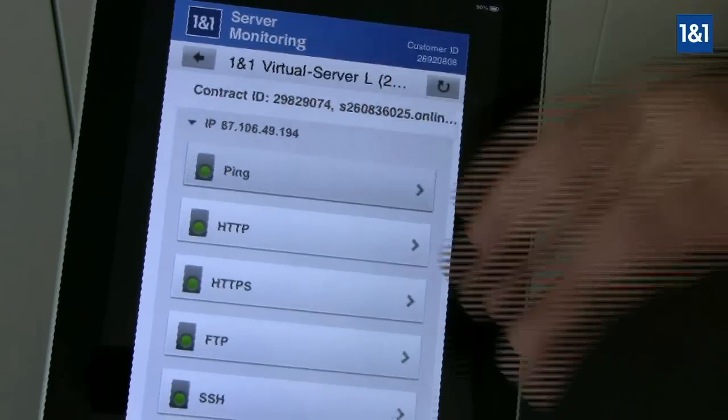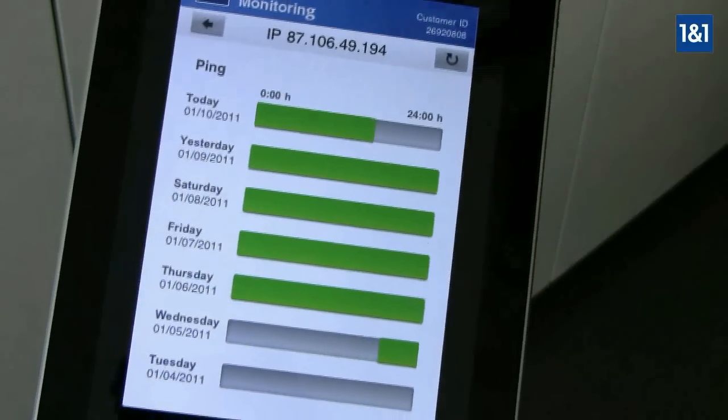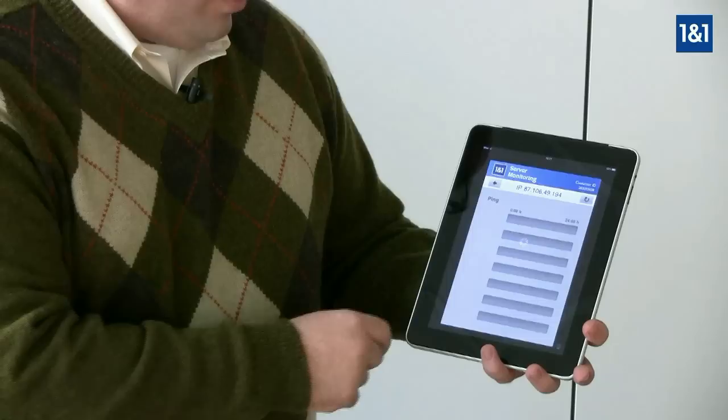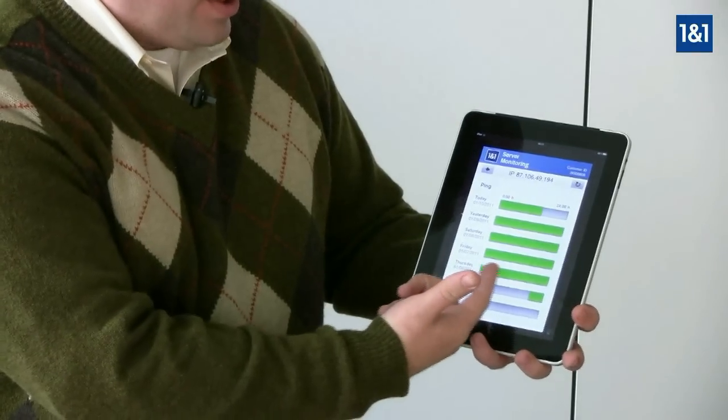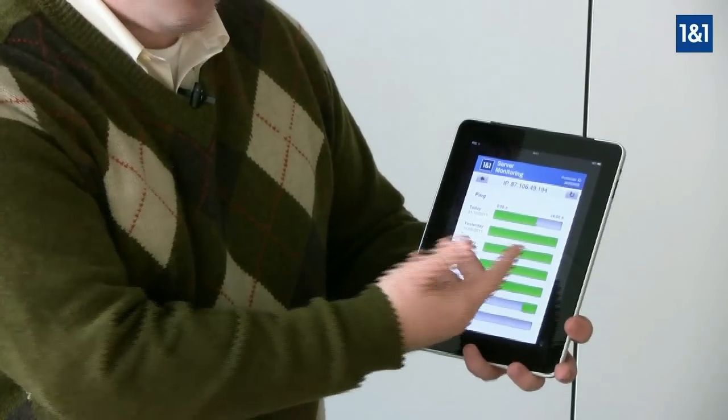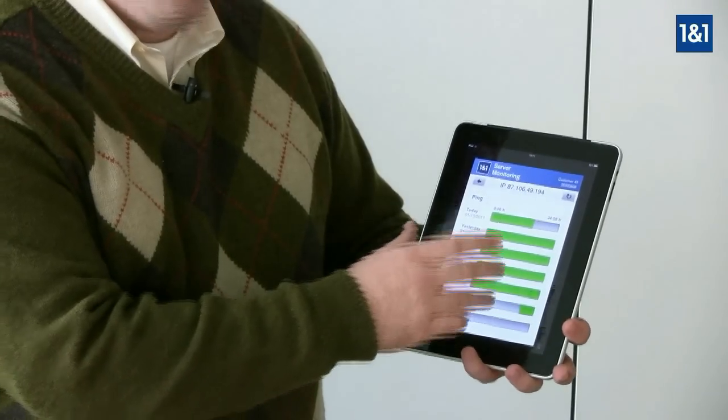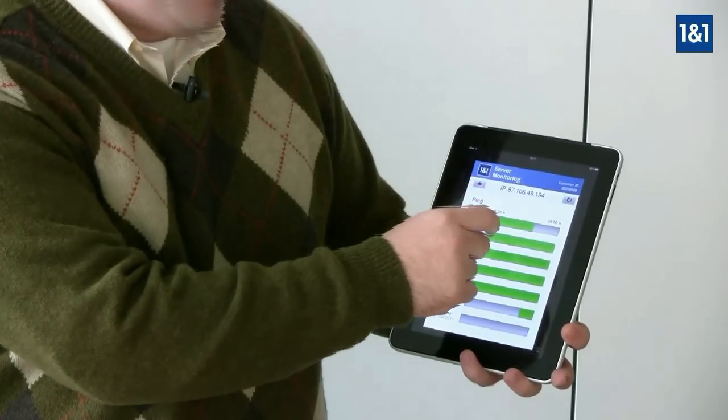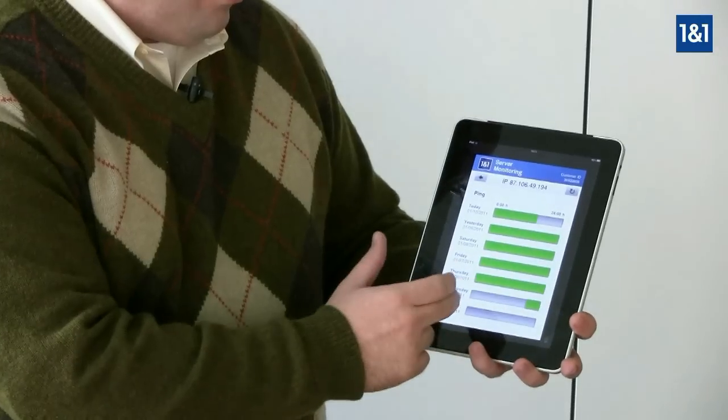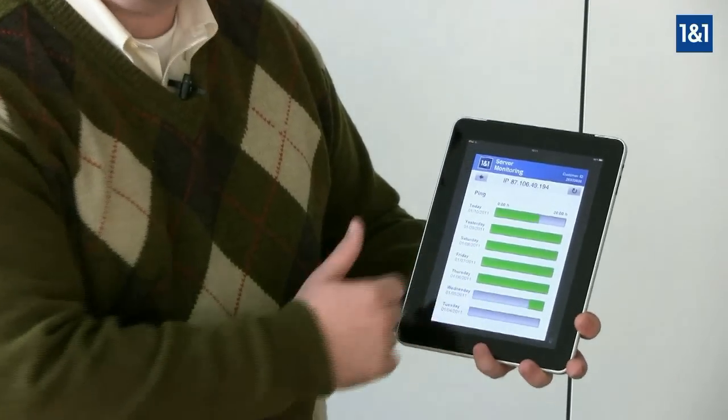What we can do is click on some of these different IP services and you can actually take a look at the history of what's been happening. As you can see, everything's coming up as green, so that means it's been up and running for this length of time. If it were down, it would be showing up as a red spot, and if it were not configured, it would be showing up as gray.